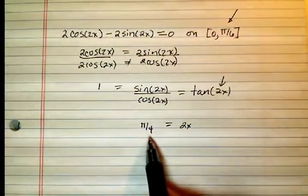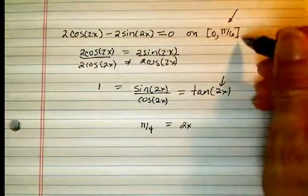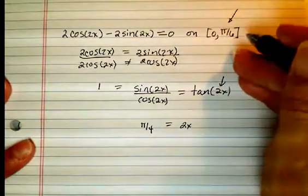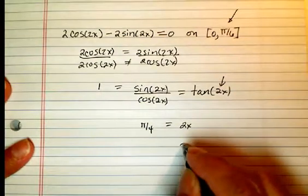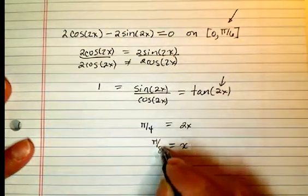Now, pi over 4 is not on my interval, but remember, this interval is what defines the restrictions on x. And so, if I solve for x, I divide both sides by 2, I get pi over 8.